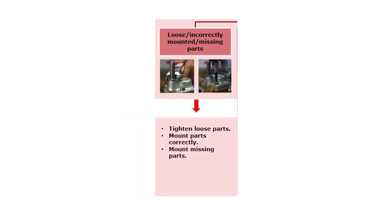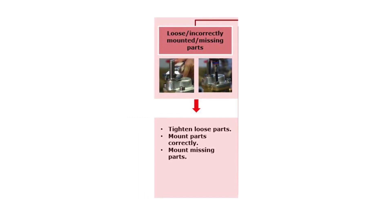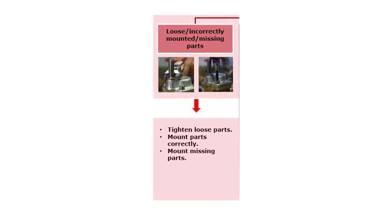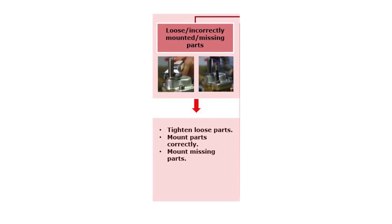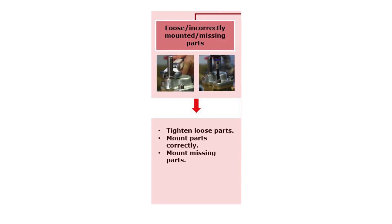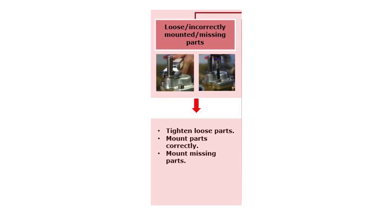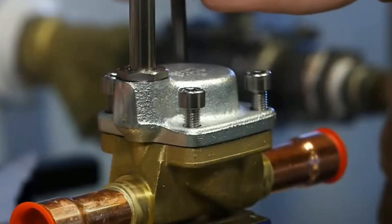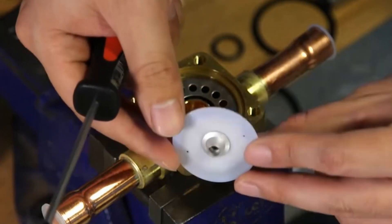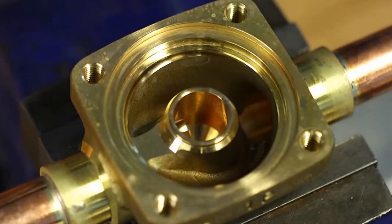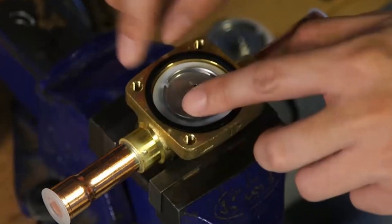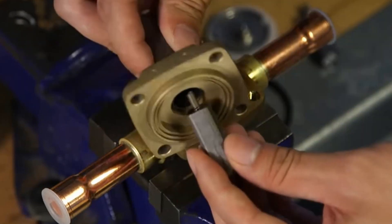Now, if there seems to be loose or incorrectly mounted parts, or maybe missing parts, after earlier service or inspection causing valve external leakage, then as a first step, tighten possible parts as seen shortly here. And if needed, take the valve apart, if it is serviceable, and ensure that valve parts are mounted correctly and possible missing parts are mounted, as seen shortly here.